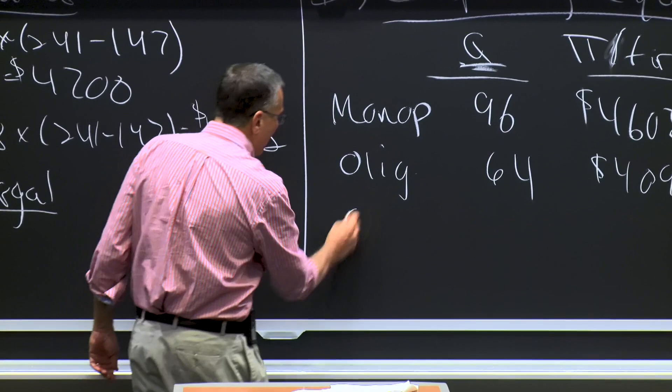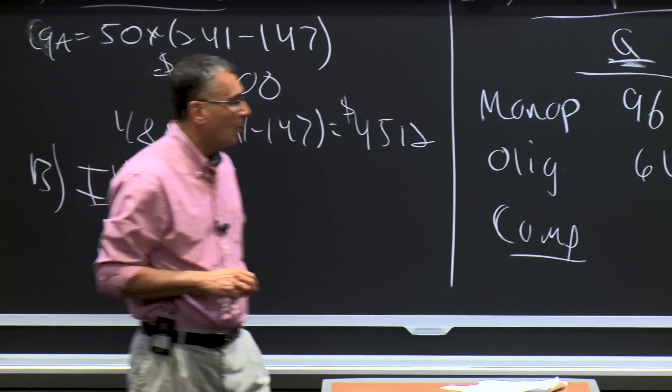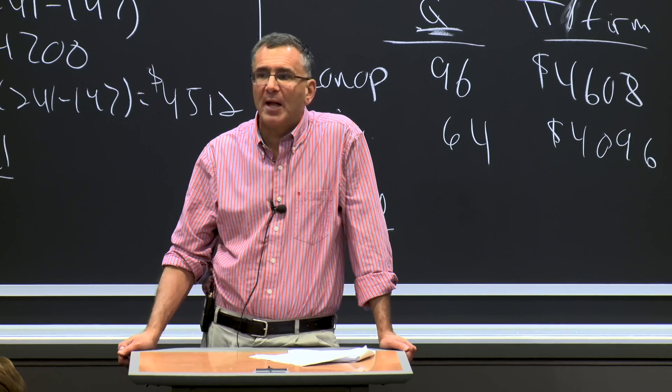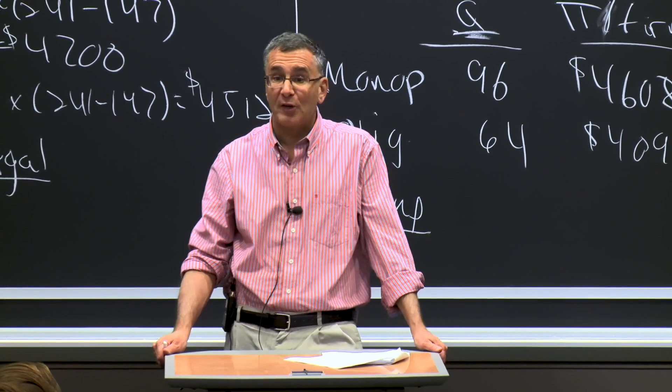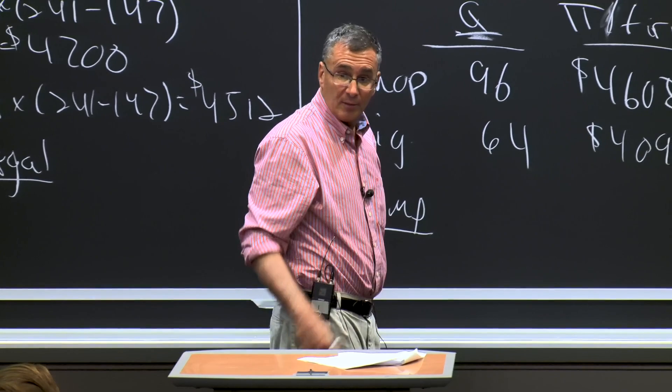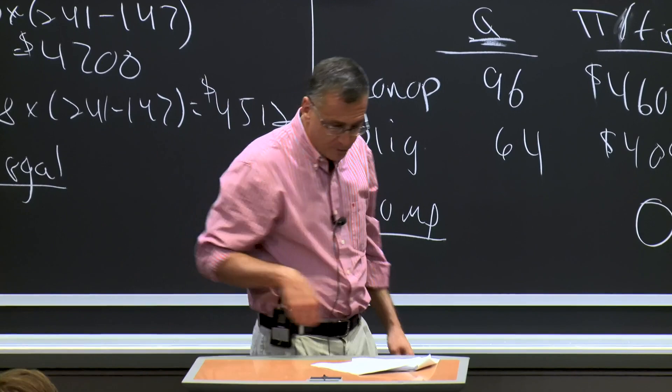What's the competitive outcome in this market? In a perfectly competitive market, price equals marginal cost, so price would be $147. Profits would be zero. And quantity would be 339 minus 147, or 192 flights.